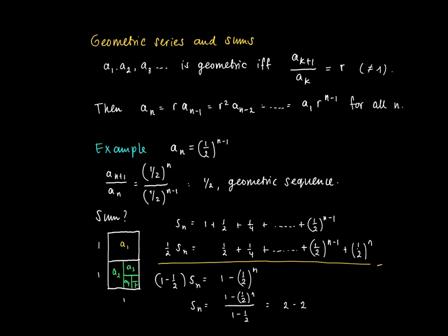Which equals 2 times (1 - (1/2)^n), so this is 2 - 2(1/2)^n. So this is an explicit formula for the nth partial sum of elements of a geometric sequence.